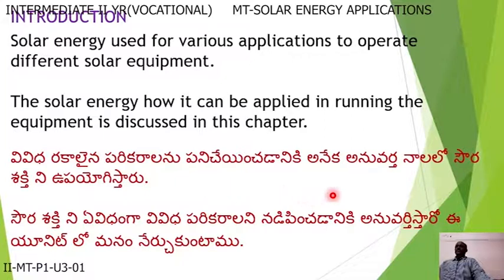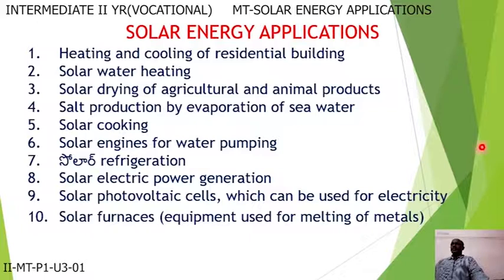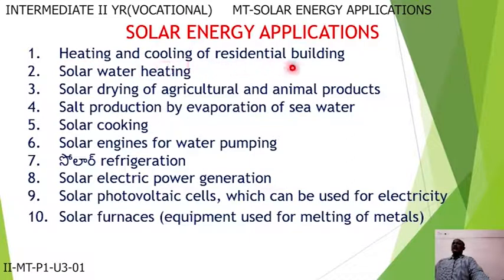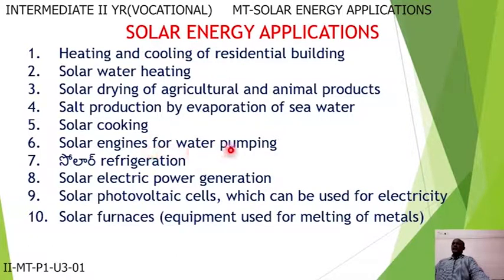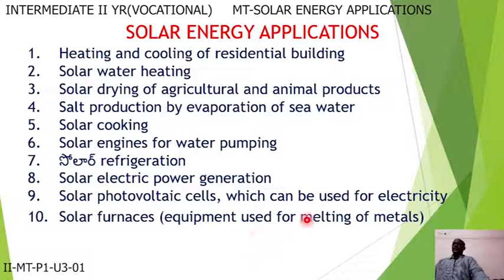The different areas where solar energy is applied are: first, heating and cooling of residential buildings; second, solar water heating; third, solar drying of agriculture and animal products; fourth, salt production by evaporation of sea water; fifth, solar cooking; sixth, solar engines for water pumping; seventh, solar refrigeration; eighth, solar electric power generation; ninth, solar photovoltaic cells for electricity; tenth, solar furnaces for melting of metals.